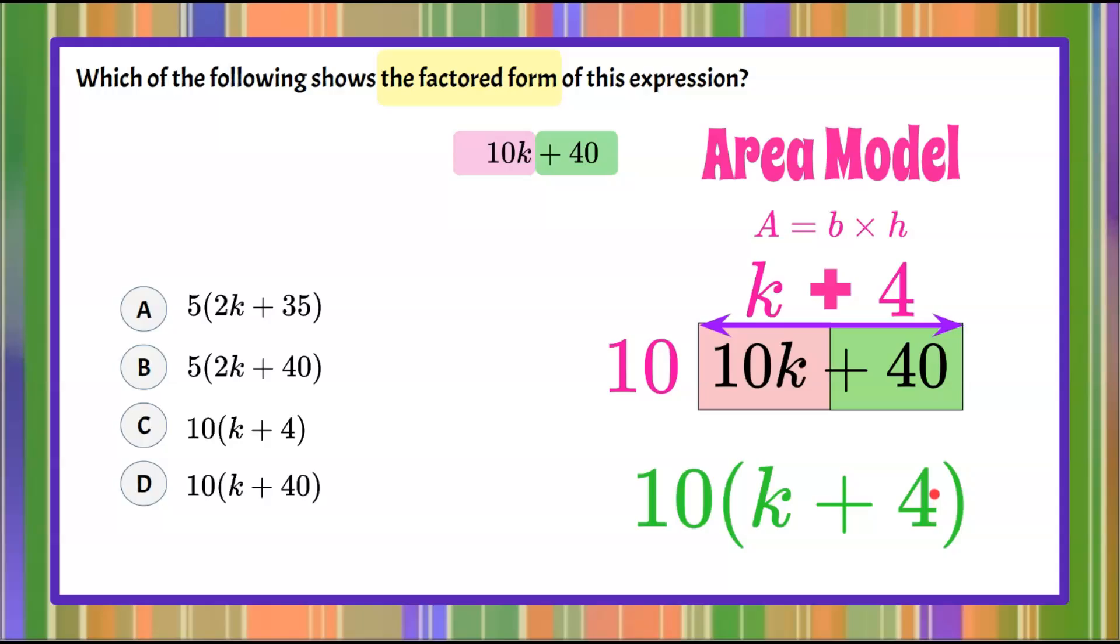Now I have it in factored form using the area model, and I can identify that my correct solution is answer choice C. So 10 multiplied by the quantity k plus 4 is completely factored of this expression 10k plus 40.